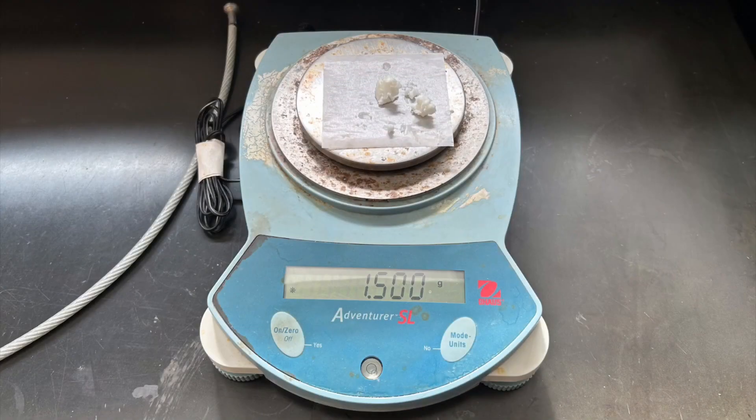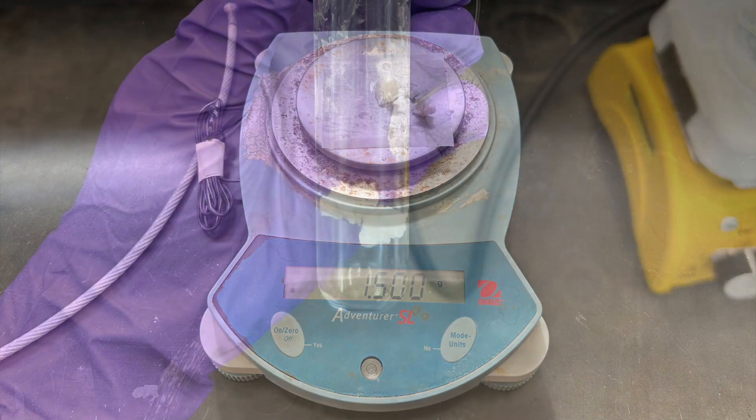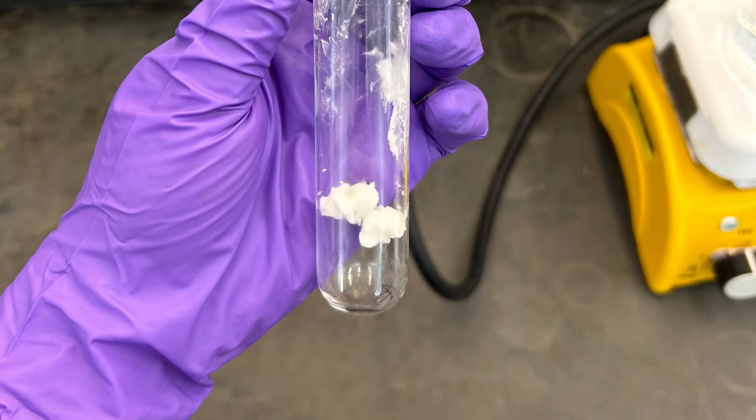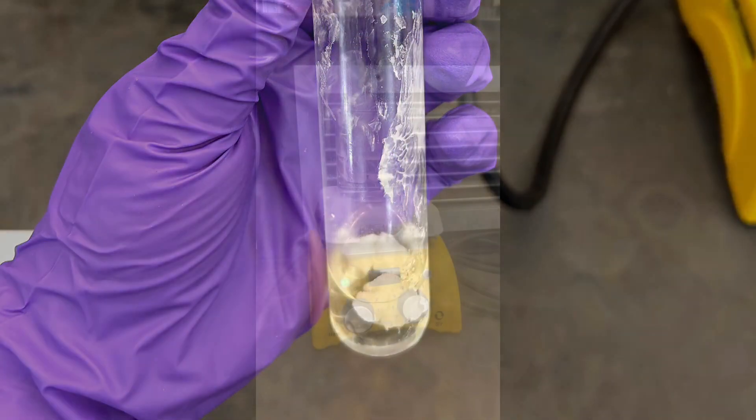Now weigh 1.5 grams of Crisco and place it in a large test tube as well as 10 milliliters of a 10% potassium hydroxyl solution.